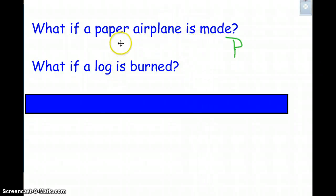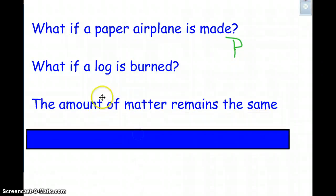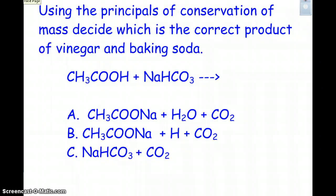But what if a log is burned? Then you're destroying matter, right? It looks like it. It looks like matter is being destroyed because the log vanishes. But if you were to light a log on fire in a sealed room, you would still have the same amount of mass because that smoke and ash are going to add up to the same amount of mass that that log once was. So conservation of matter still applies. The amount of matter remains the same, even in a chemical change, which the burning of that log would be.